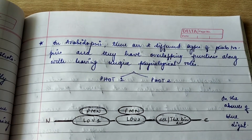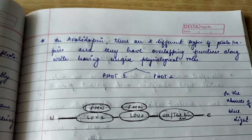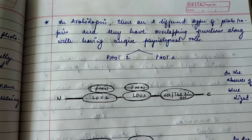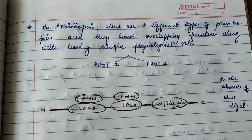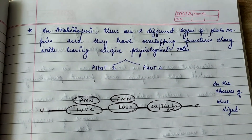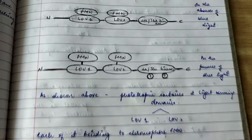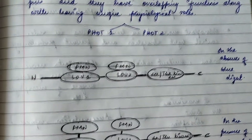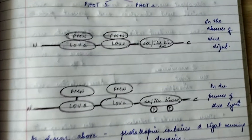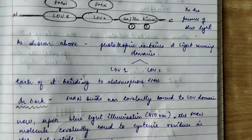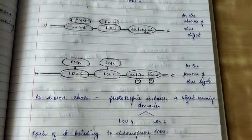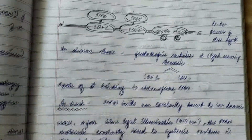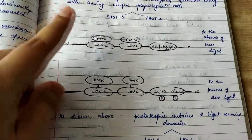In the case of Arabidopsis, there are two different types of phototropins: phot1 and phot2. Along with having unique physiological roles, they also have overlapping functions. As shown in the diagram above, phototropin contains two light sensory domains - LOV1 and LOV2. One structure shows the absence of blue light and the other shows the presence of blue light, and each LOV domain binds to the chromophore FMN.